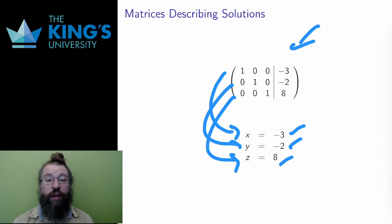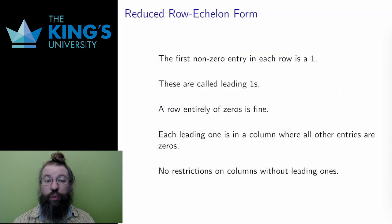Therefore, to solve a system, I have to manipulate the matrix until it looks like this. This form of a matrix, where I can read off the solutions to the linear system, is called the reduced row echelon form.